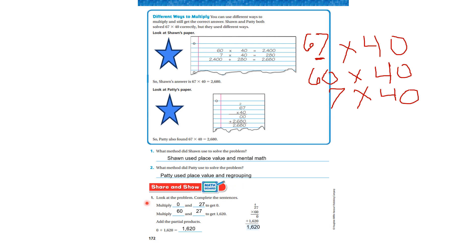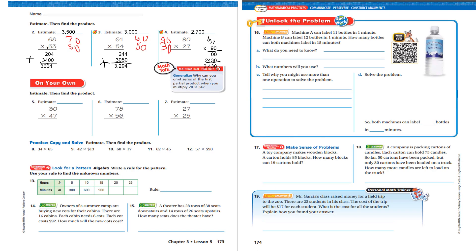So now it says look at the problem and complete the sentence. Multiply 0 and 27 and you get a 0. Multiply 60 and 27, you get 1,620. Add the partial products. 0 plus 1,620 equals 1,620. And then they multiplied it out this way too.